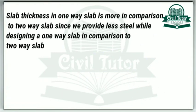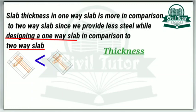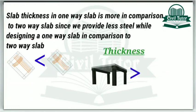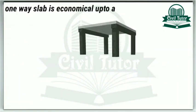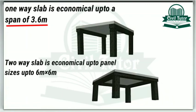Since we provide less steel while designing a one-way slab in comparison to a two-way slab, the thickness of a one-way slab is more in comparison to a two-way slab. One-way slabs are economical up to a span of 3.6 meters, whereas two-way slabs are economical up to panel sizes of 6m x 6m.